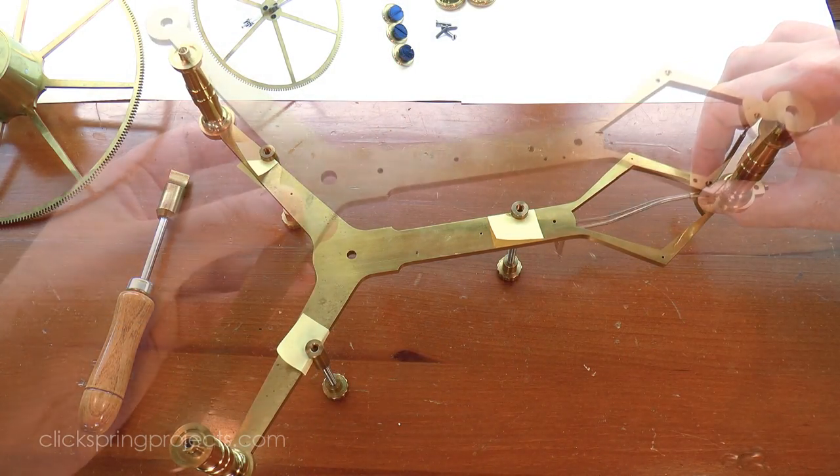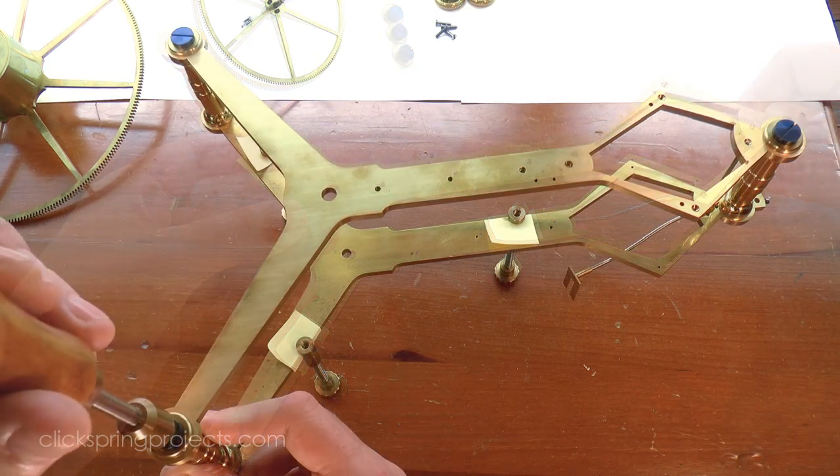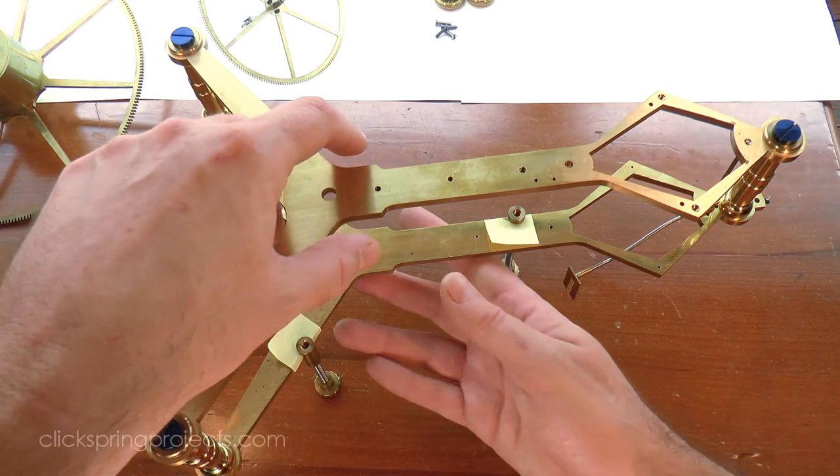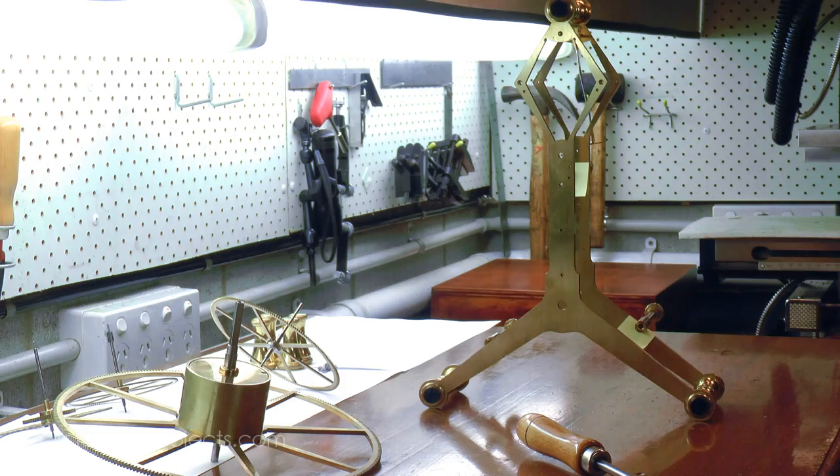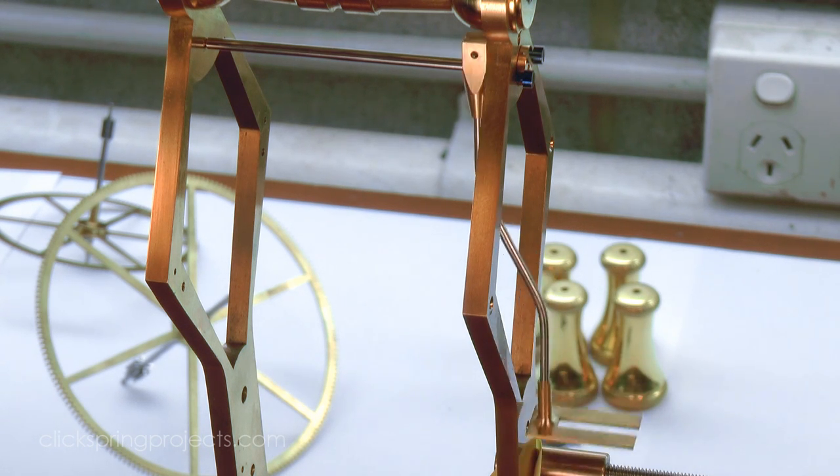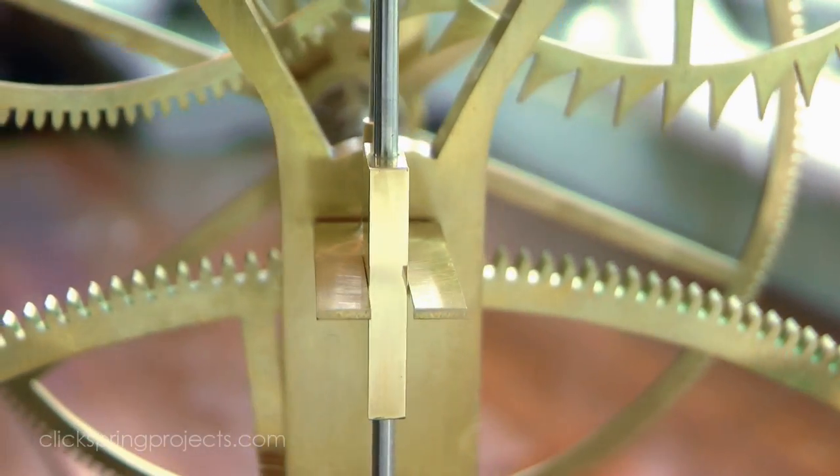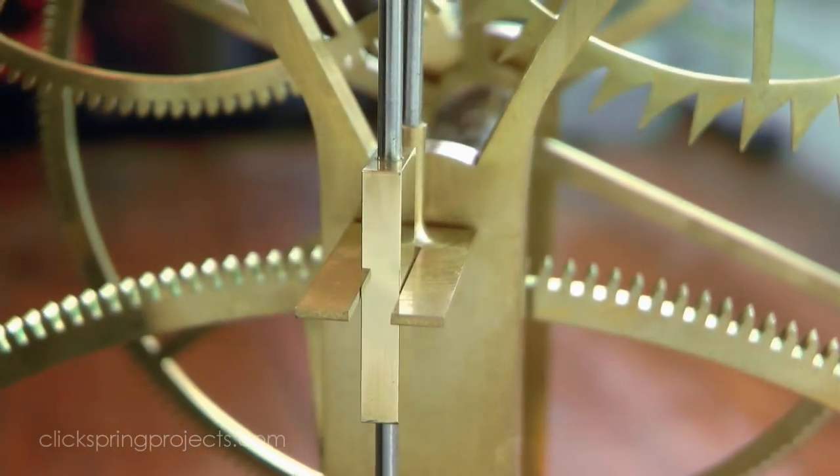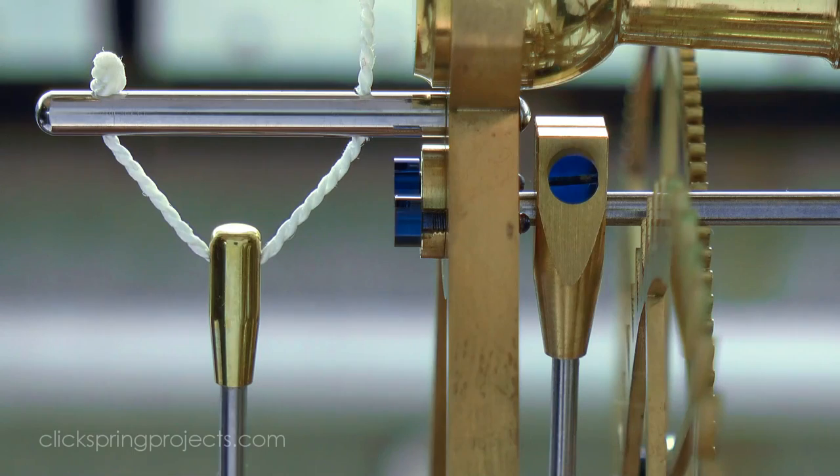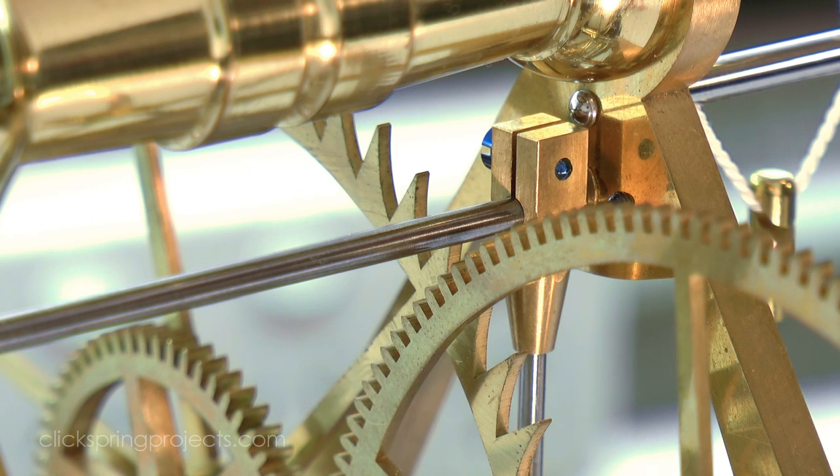And once it looked about right, I put the frames back together to give it all a test fit. There's a bit of end shake for the pallet arbor, and the crutch assembly coasts to a gentle stop, indicating minimum friction. I've left the barest clearance between the crutch fork and the pendulum block to minimize energy loss. And the eccentric bushing is ready to be adjusted as required in the next episode, which leaves just a few key components to be made before I can set the clock running.